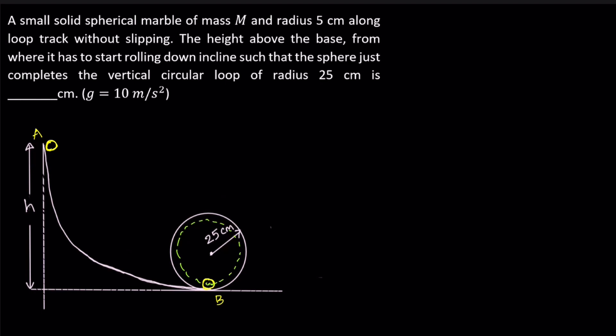That dotted circle has a radius of 25 minus 5 = 20 centimeters. We define capital R as the radius of the circular loop (25 cm) and small r as the radius of the marble (5 cm). At the topmost position, the marble has center-of-mass velocity v and is rolling without slipping, so v = r·ω.